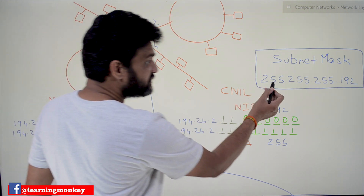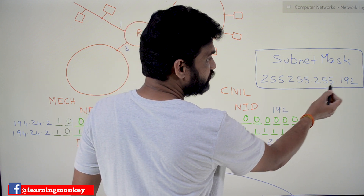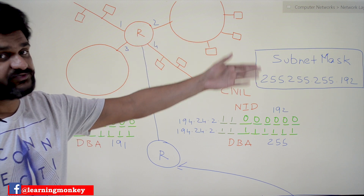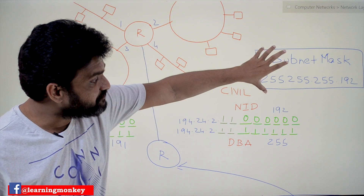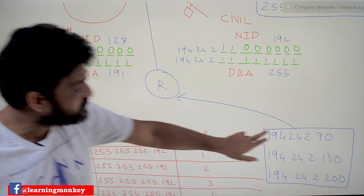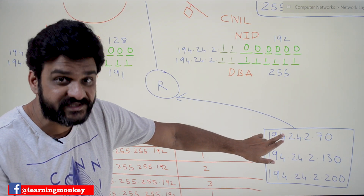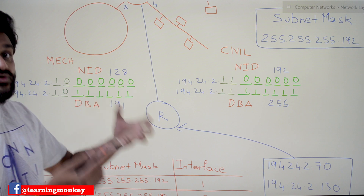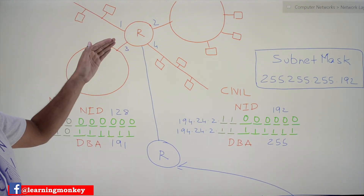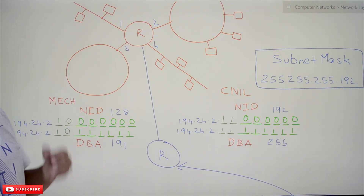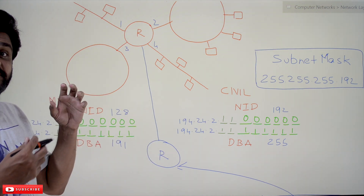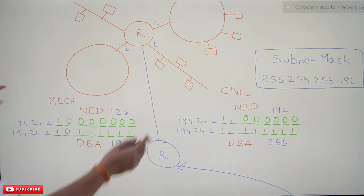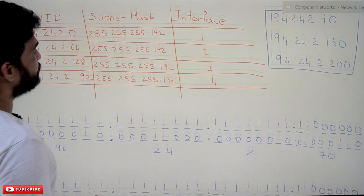What is the subnet mask for this entire network? For all these subnetworks, the subnet mask is 255.255.255.128 — this was also discussed in our previous video. Using this subnet mask and based upon the destination IP addresses of the messages that arrive at this router, how the router decides through which interface the packet has to be transferred — to which subnetwork the packet belongs — is what we will try to understand.